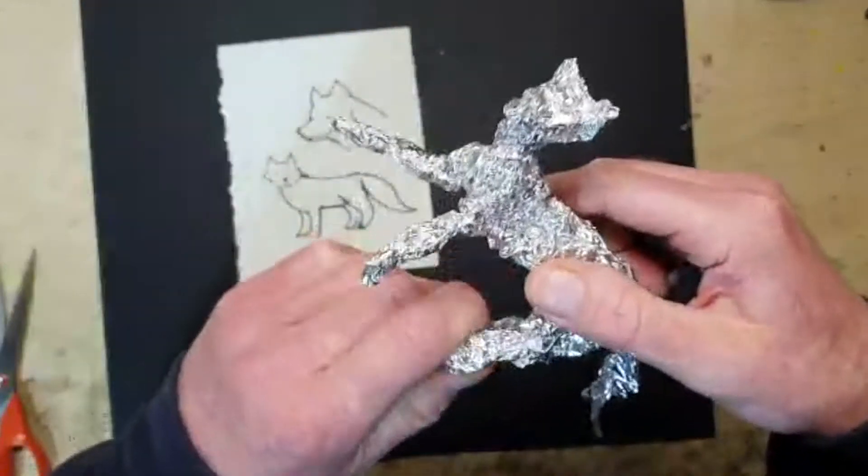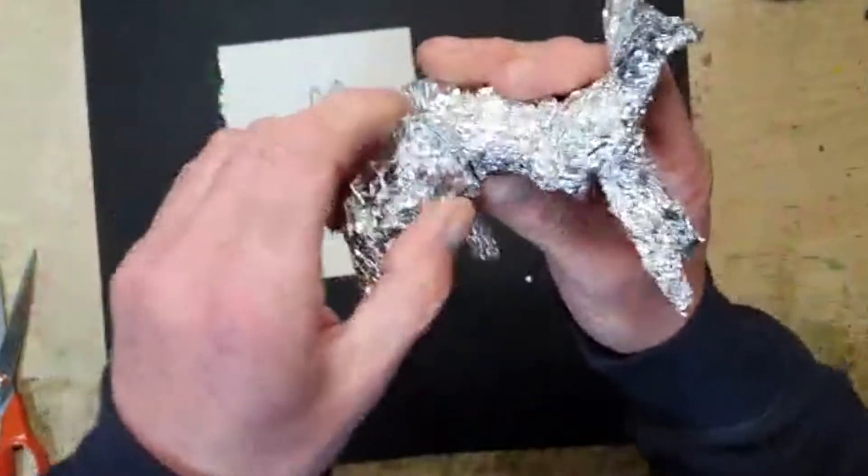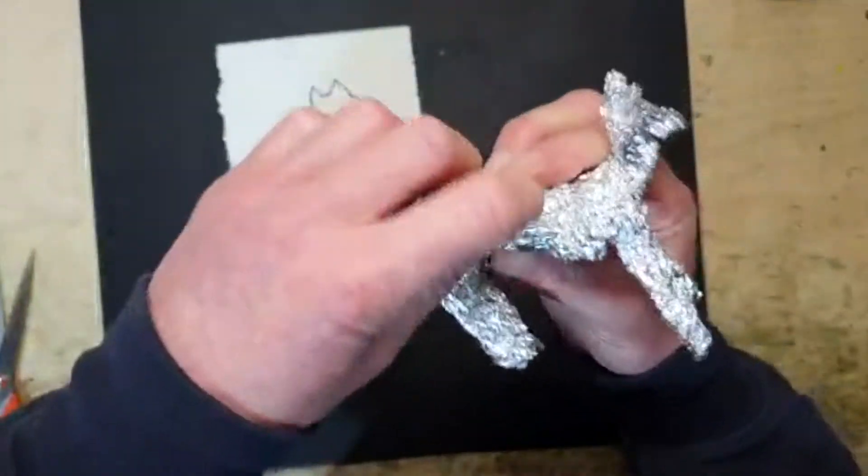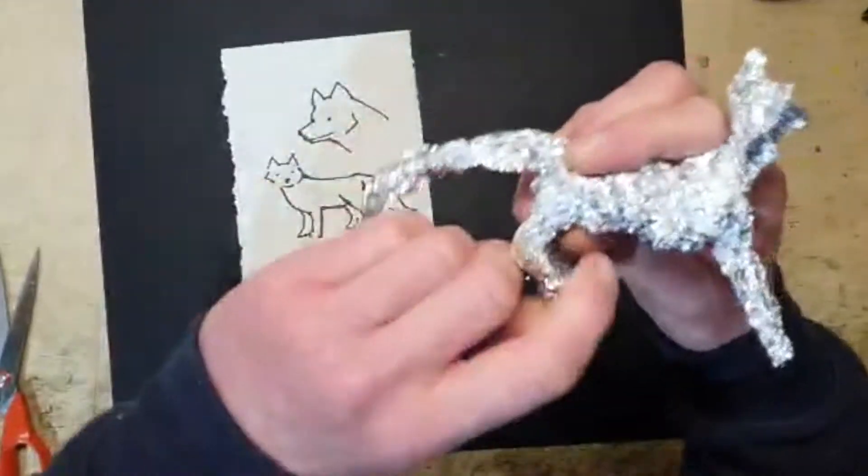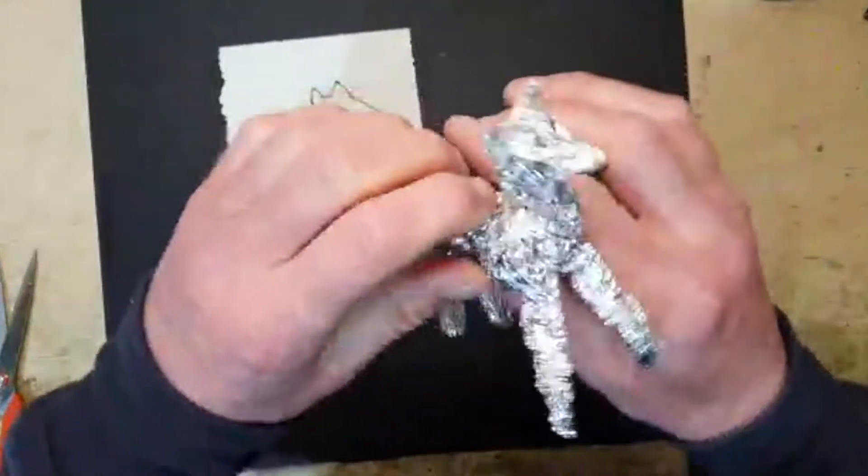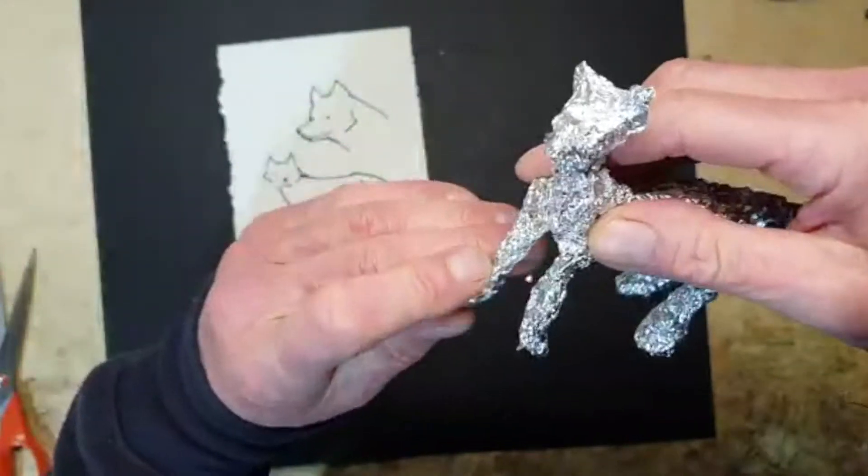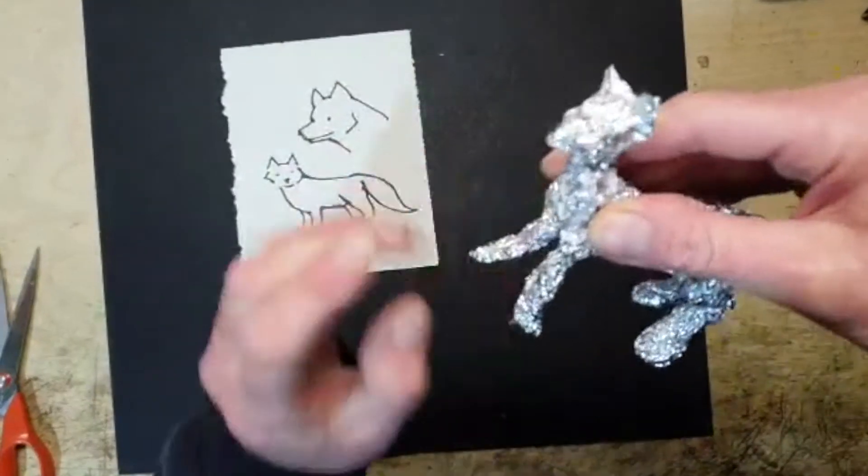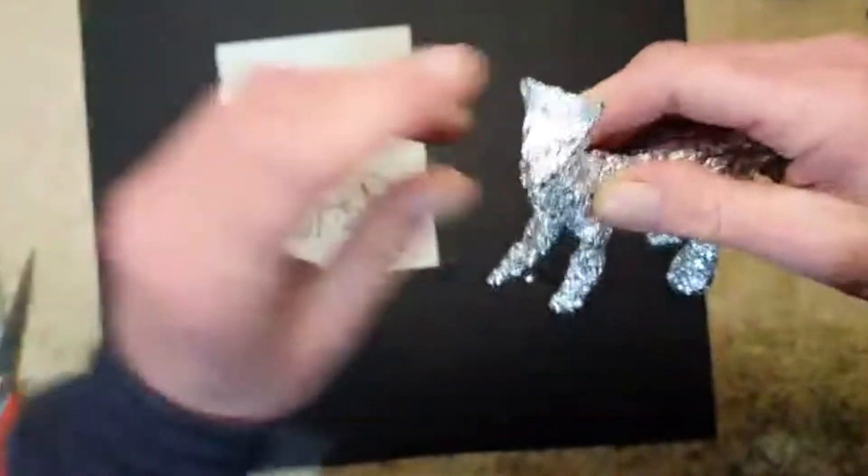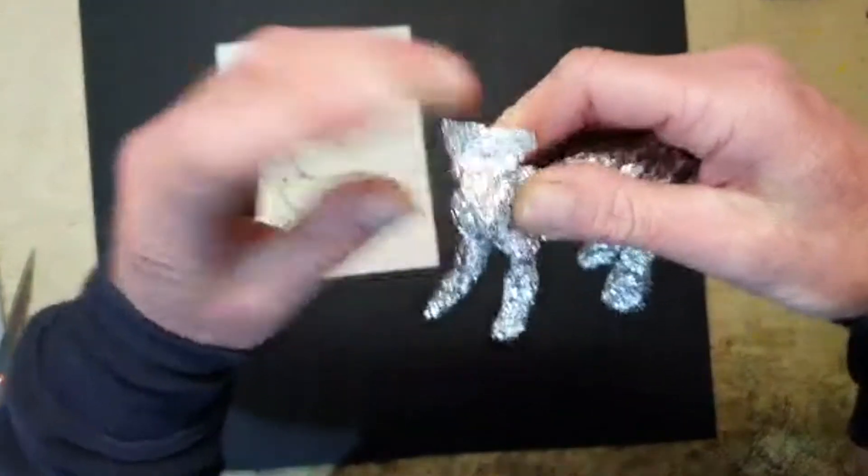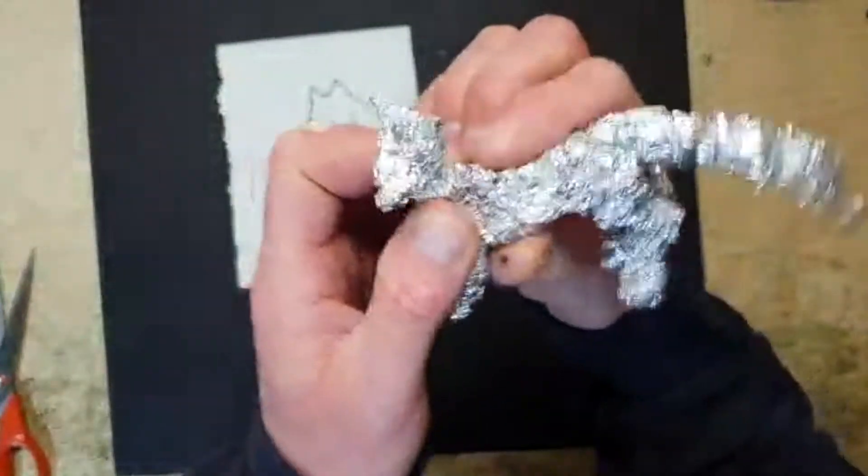The legs are quite thick and short. The body of a fox is longer than a cat, it's more like a dog really. The fox really is quite like a dog.